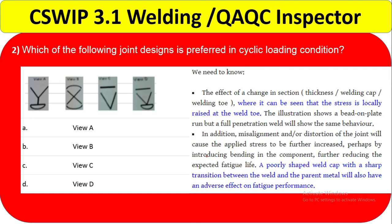You need to know how cyclic loading condition actually works. The effect of a change in section — it may be welding cap, it may be welding toe. If this section changes, stress is locally increased at the weld toe. If you are changing in thickness, changing in welding cap, or changing in welding toe, stress can be generated at the weld toe. The illustration shows a bead-on-plate run, but a full penetration weld will show the same behavior.